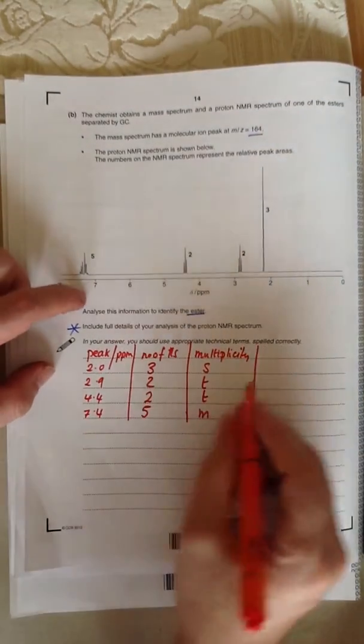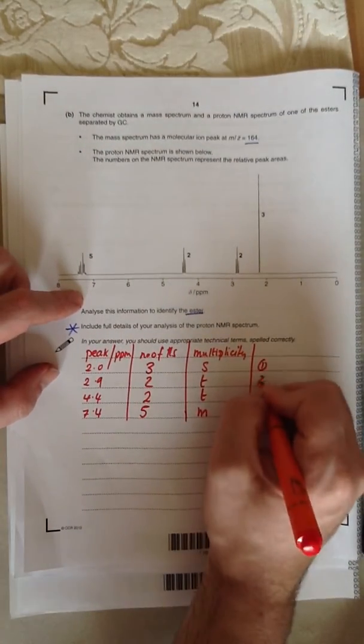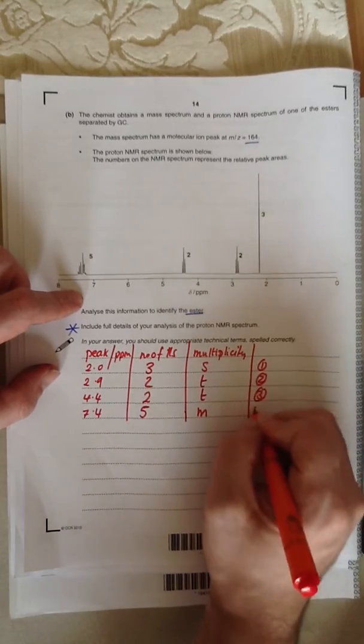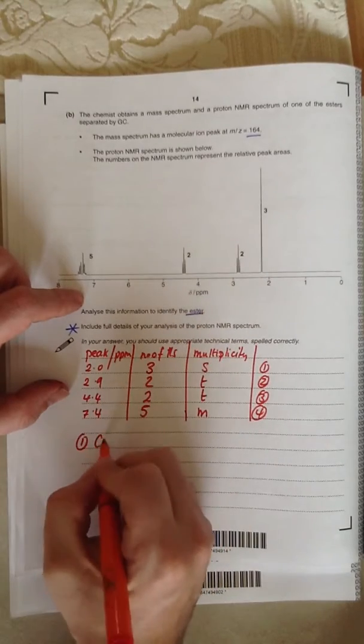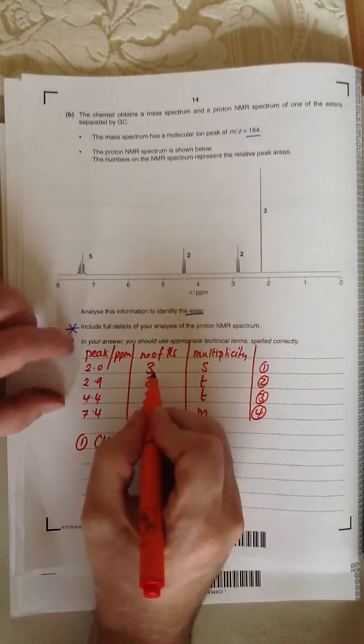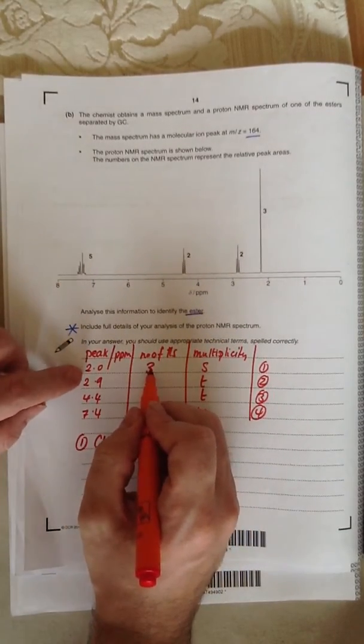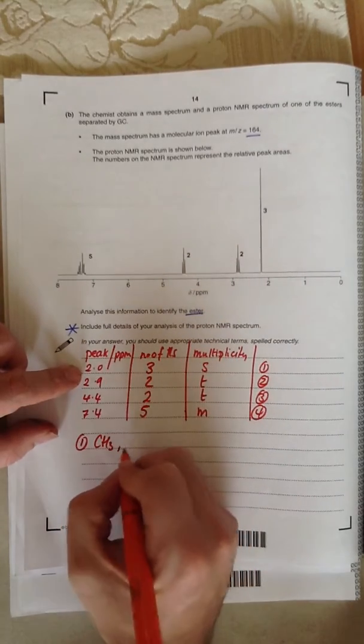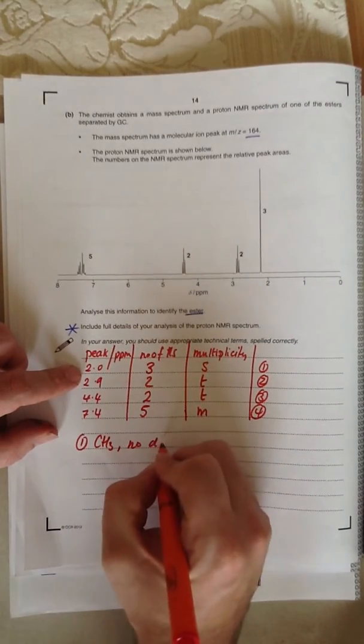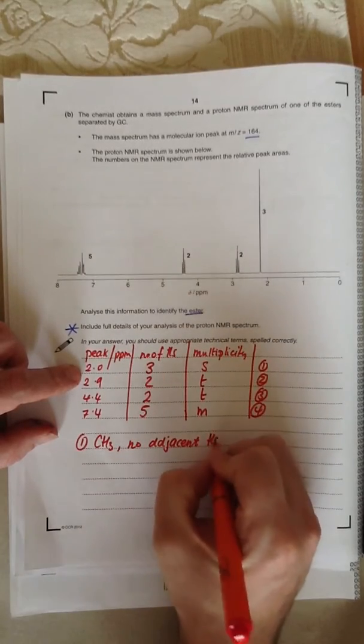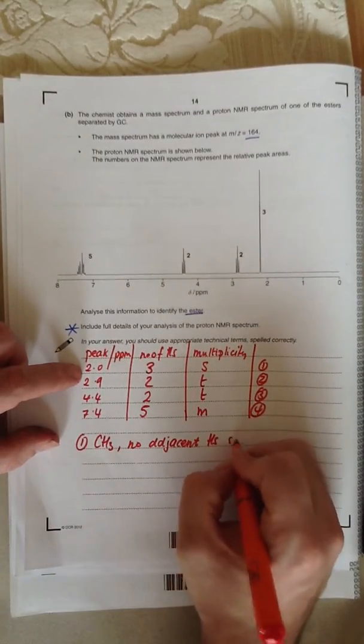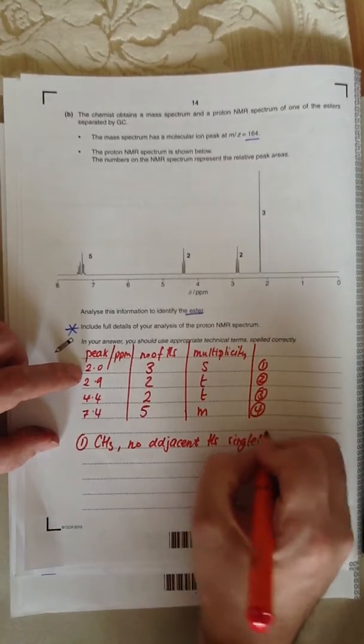So what can we say? We'll call it 1, 2, 3, 4. From this, we can say 1 is a CH3. And it's a CH3 because we know there's 3 hydrogens, and it has no adjacent hydrogens because it's a singlet. It doesn't couple to anything.